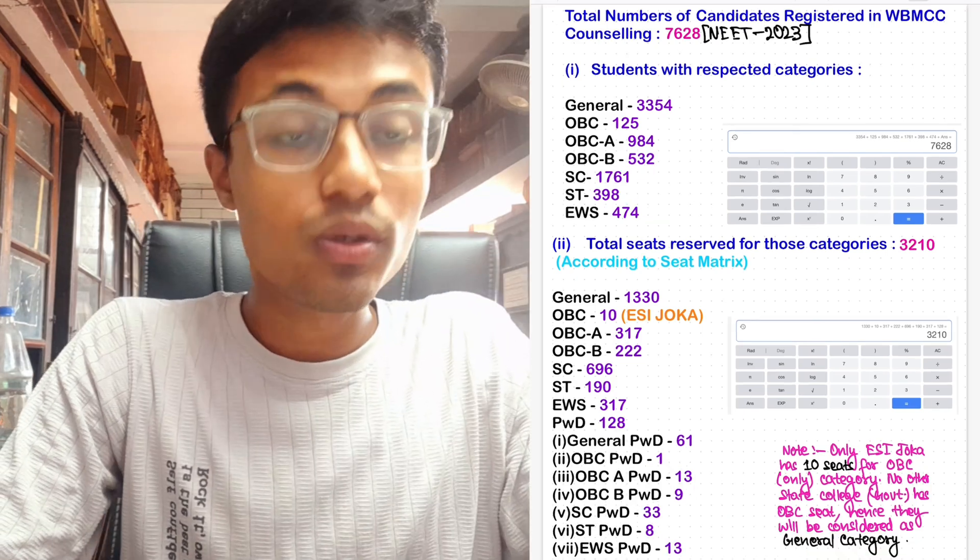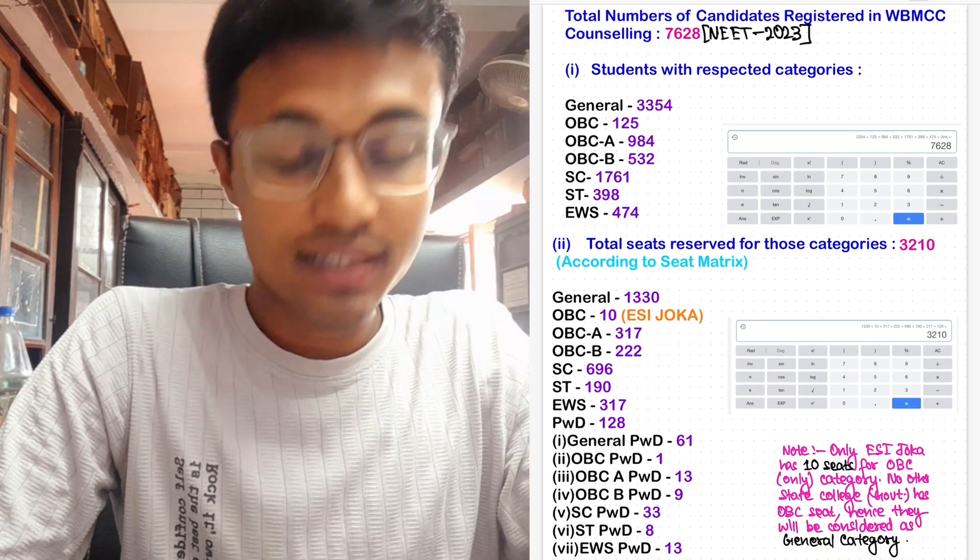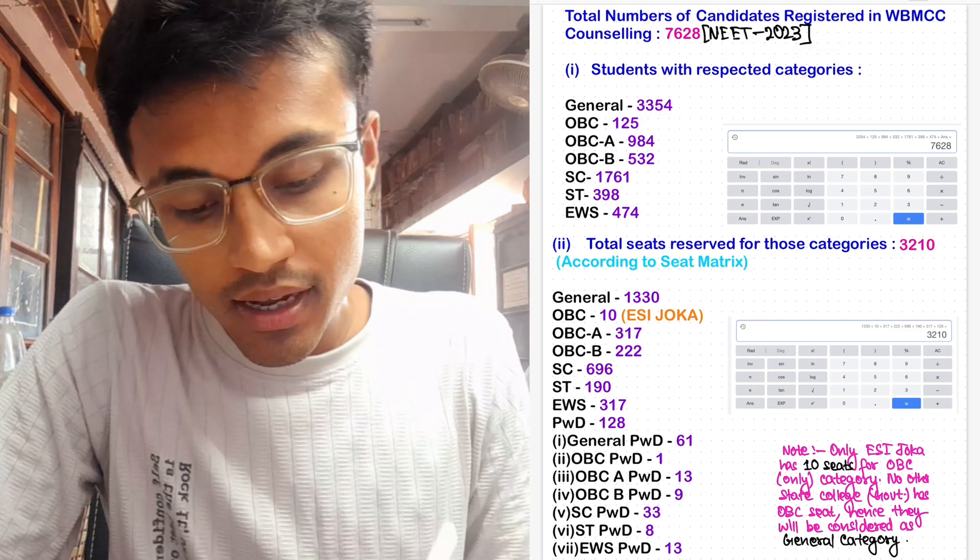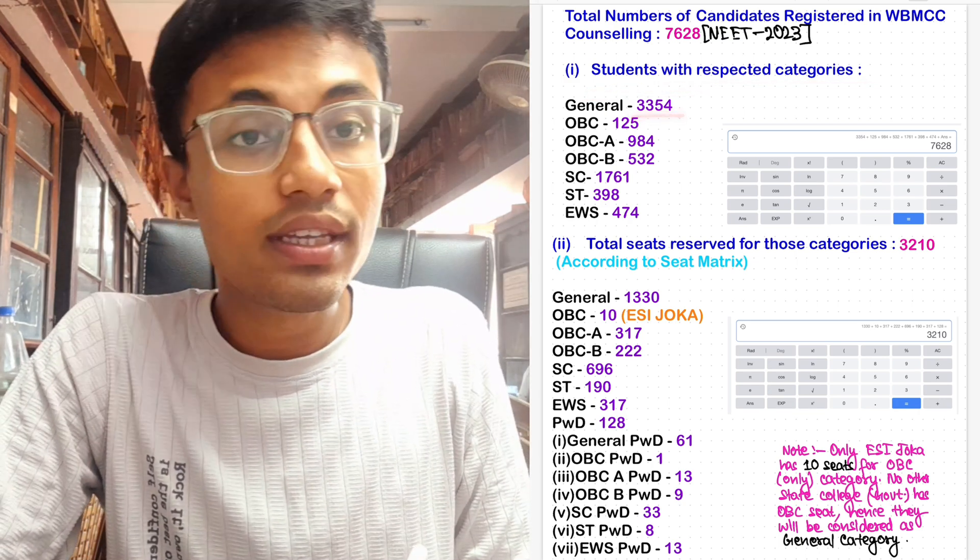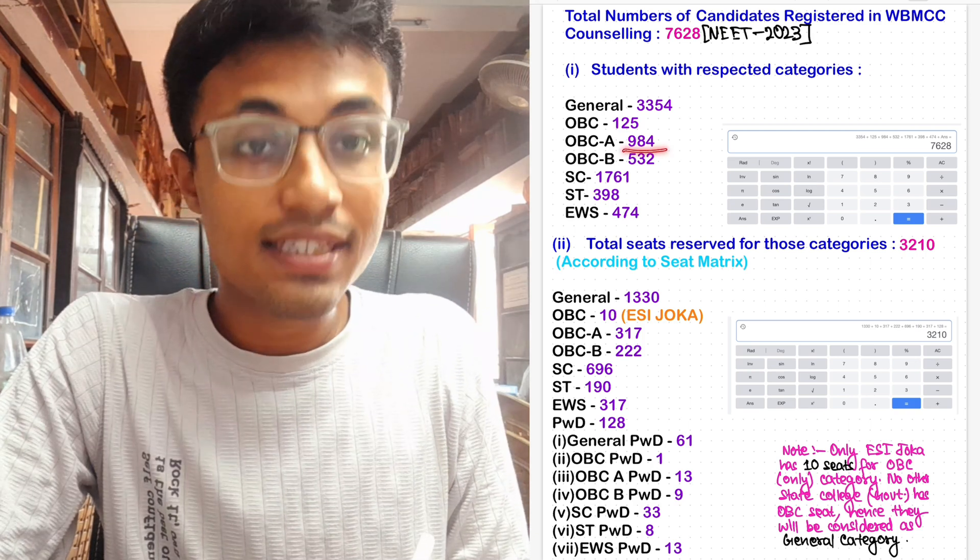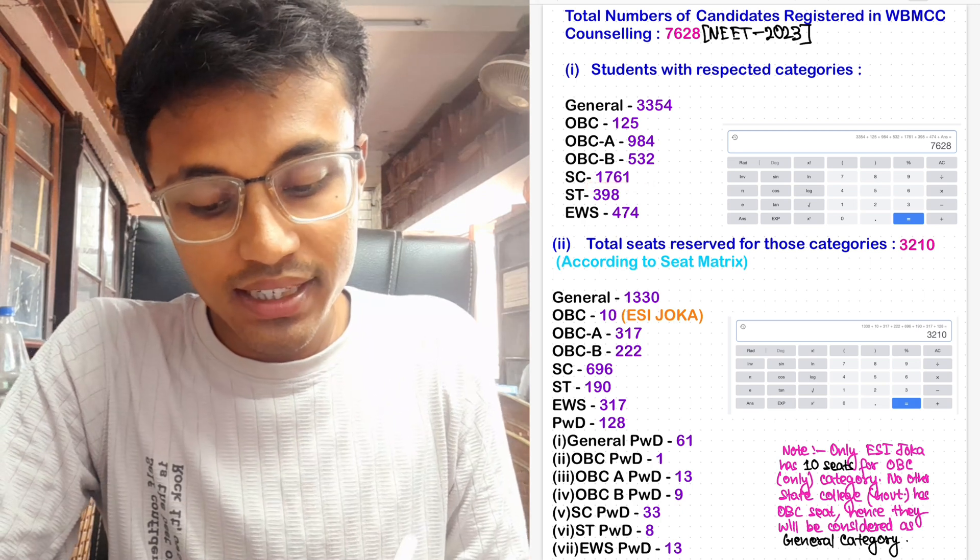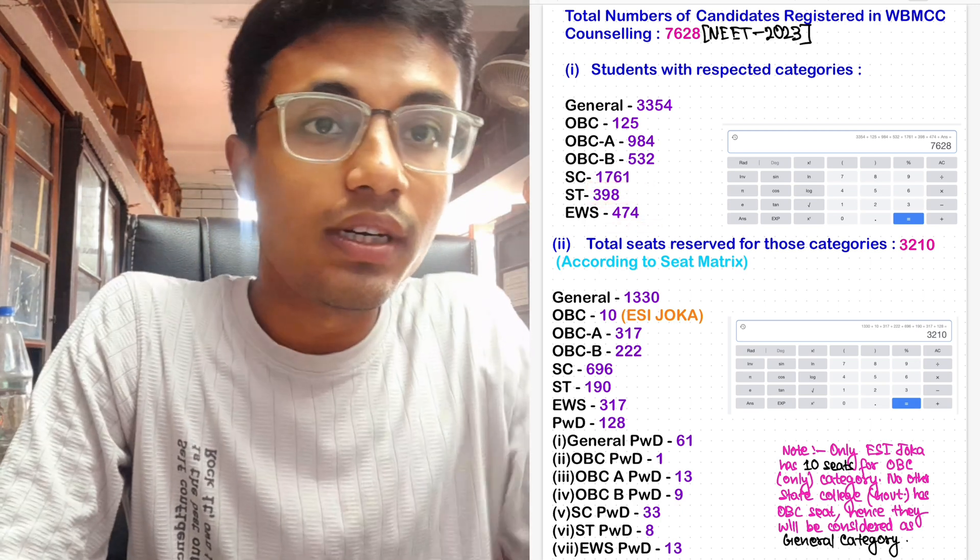As you can see on your screen, the total number of candidates registered in WBMCC counseling is 7,628 for NEET 2023 this year. The students with respected categories are: General 3,354, OBC 125, OBC-A 984, OBC-B 532, SC 1,761, ST 398, and EWS 474.